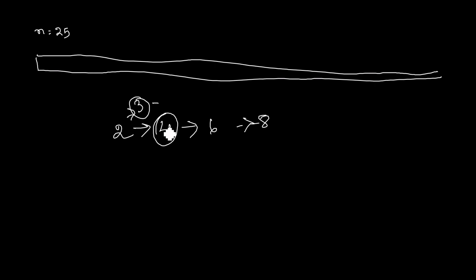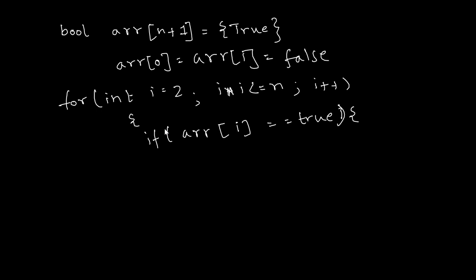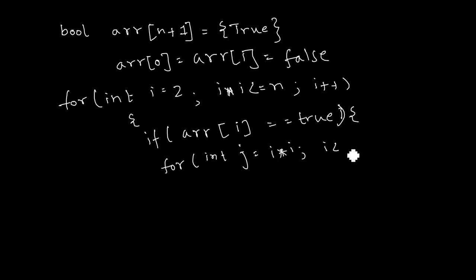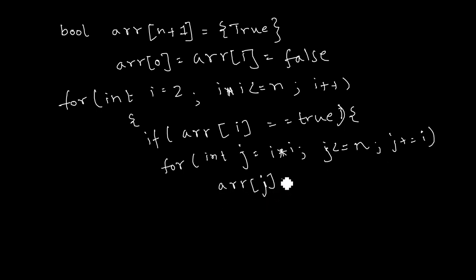If a number is still true, we keep it as true and mark all its multiples as false. We start a variable j at i×i because smaller multiples are already handled. While j is less than or equal to n, we set the element at index j to false and increment j by i. This small piece of code gives us the complete sieve table.